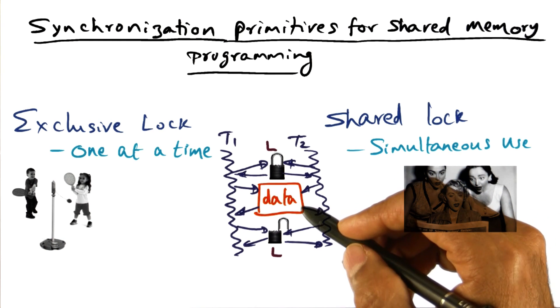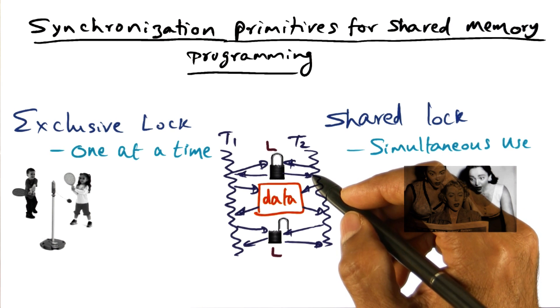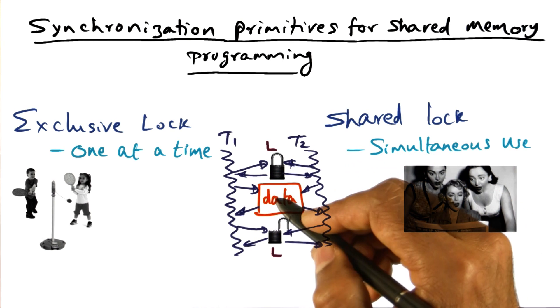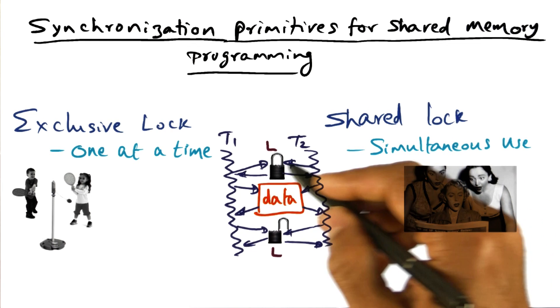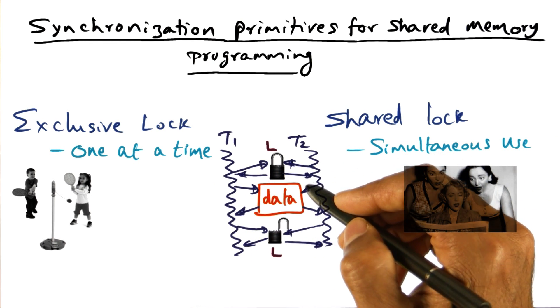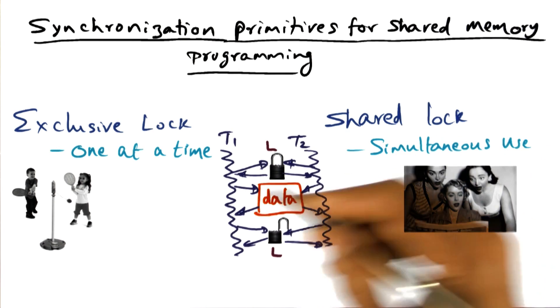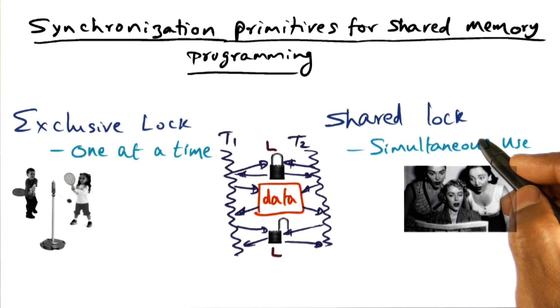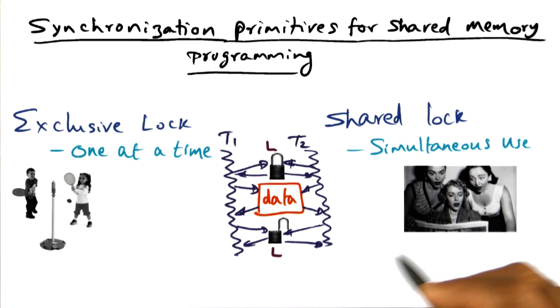That you have a database and there are records in the database that multiple threads want to inspect. But they want to make sure that while they're inspecting it, that the data itself is not going to be changed. So a shared lock is something that allows multiple readers to access some data with the assurance that nobody else is going to be modifying the data. So these are two different types of locks that you might have that might be useful in developing multi-threaded shared memory programs.